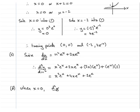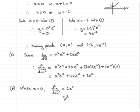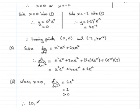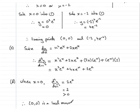When x = 0, the x²eˣ and 4xeˣ terms vanish, leaving 2e⁰ = 2, which is positive (greater than 0). This tells us that at (0, 0) we have a minimum turning point. Therefore (0, 0) is a local minimum — d²y/dx² > 0 always gives a minimum.